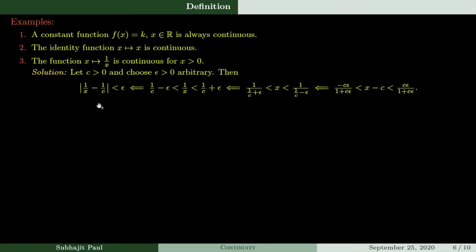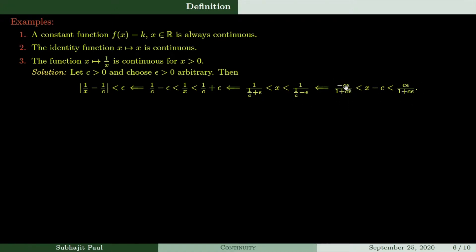We want to show that the distance between the functional values at x and at c is smaller than epsilon — that is, |1/x − 1/c| < epsilon. Breaking this up: 1/c − epsilon < 1/x < 1/c + epsilon. Taking reciprocals, the ordering reverses: 1/(1/c + epsilon) < x < 1/(1/c − epsilon), assuming epsilon is chosen so that 1/c − epsilon ≠ 0. Subtracting c from all sides, we get: −cε/(1 + cε) < x − c < cε/(1 + cε).